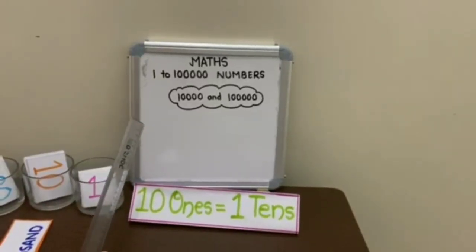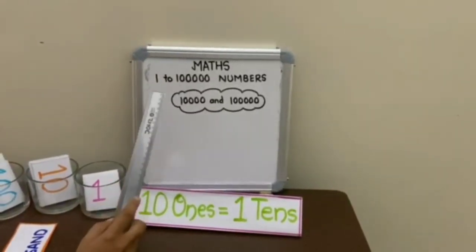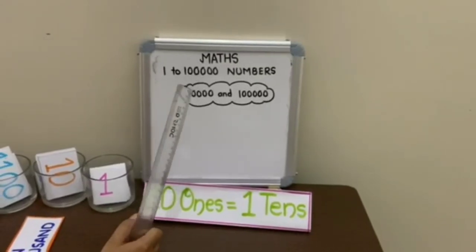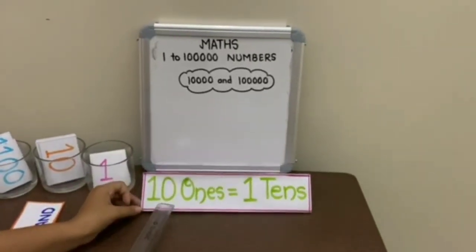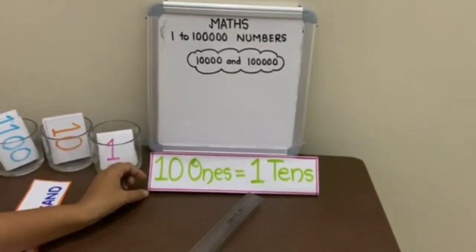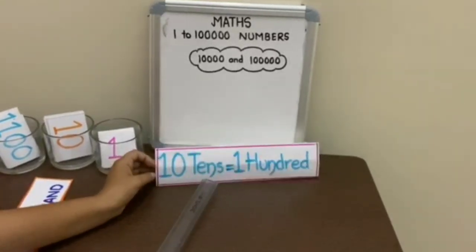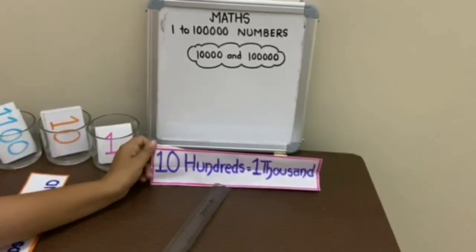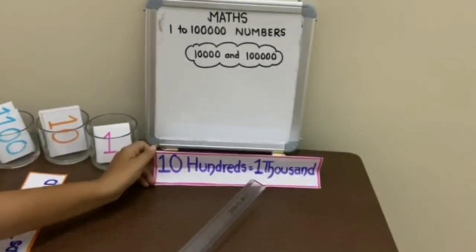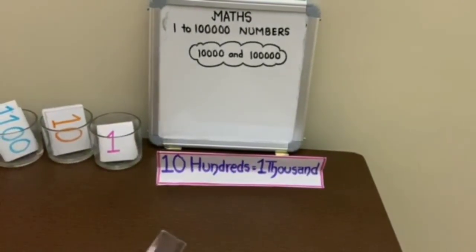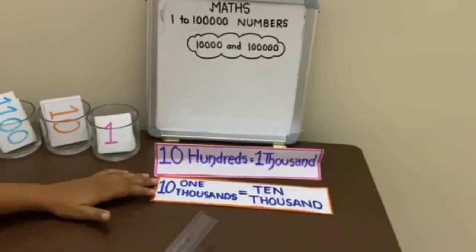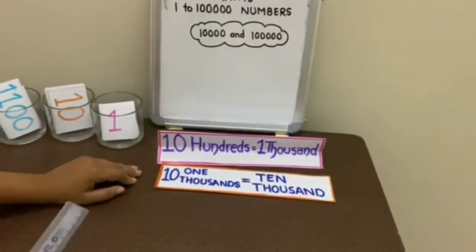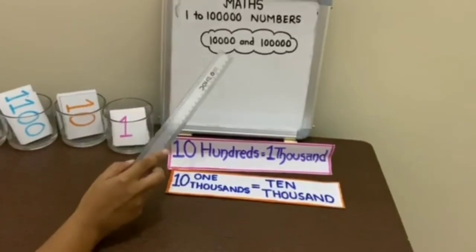Hello students, till now you have learned numbers from 1 to 10,000. You already know that 10 ones equal 1 ten, 10 tens equal 100, 10 hundreds equal 1,000, and 10 one-thousands equal 10,000. Today we will learn about